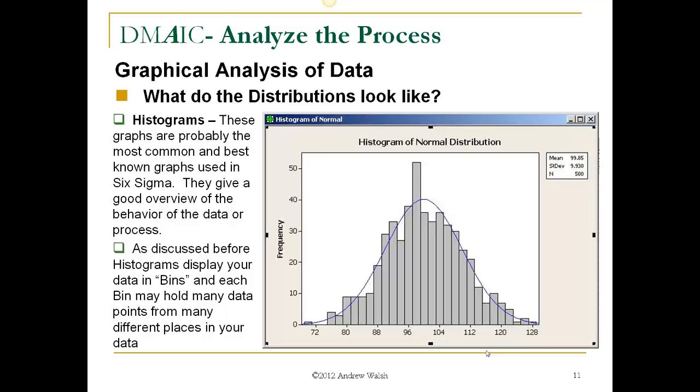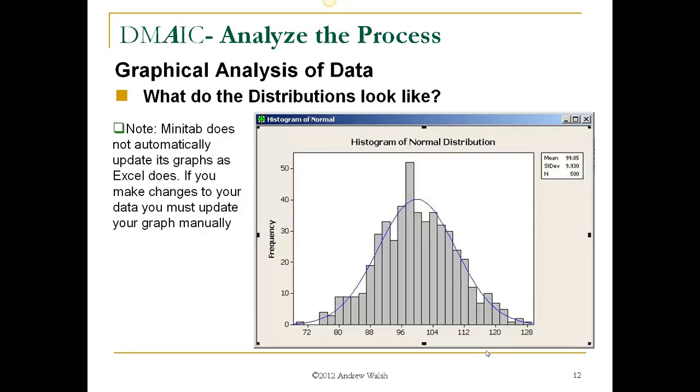Histograms. These are probably the most common and best-known graphs used in Six Sigma and elsewhere. They give a good overview of the behavior of the data or the process. As discussed before, histograms display your data in bins, and each bin may hold many data points from many different places in your data.